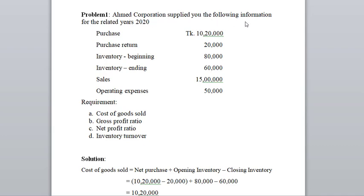Ahmed Corporation supplied the following information for the year 2020: Purchase is $10,20,000. Purchase return is $20,000. Inventory at beginning (opening) is $80,000. Inventory ending is $20,000. Sales is $15,00,000. Operating expenses is $50,000. Depreciation is $20,000.